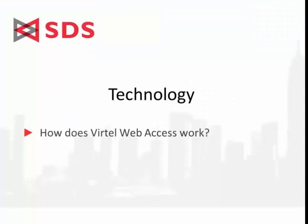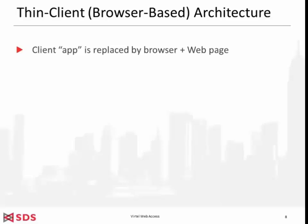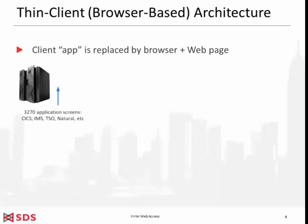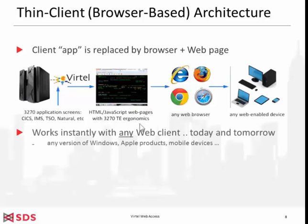How does Virtel Web Access work? Virtel relies on a thin client, also called browser-based, architecture. The traditional 3270 emulation program or client app is replaced by the browser, to which Virtel serves a webpage. 3270 application screens of CICS, IMS, and other 3270 applications are served by Virtel as HTML JavaScript web pages with 3270 emulation ergonomics. Those pages can be rendered by any web browser running on any web-enabled device — not just those available today, but those that will be available tomorrow.